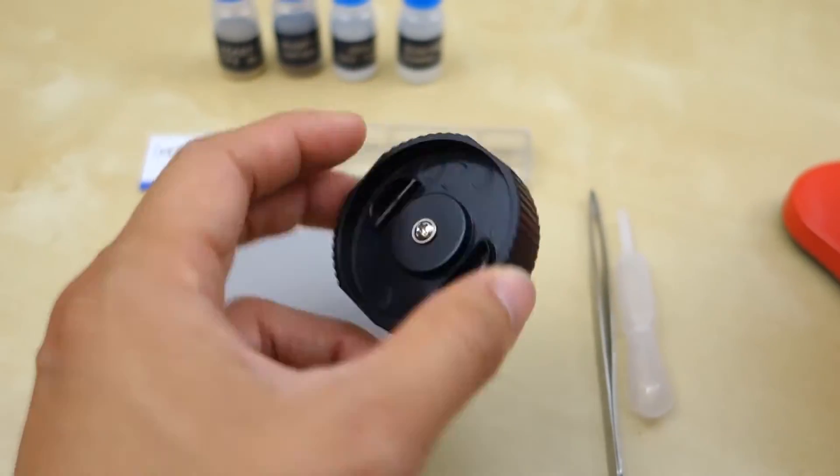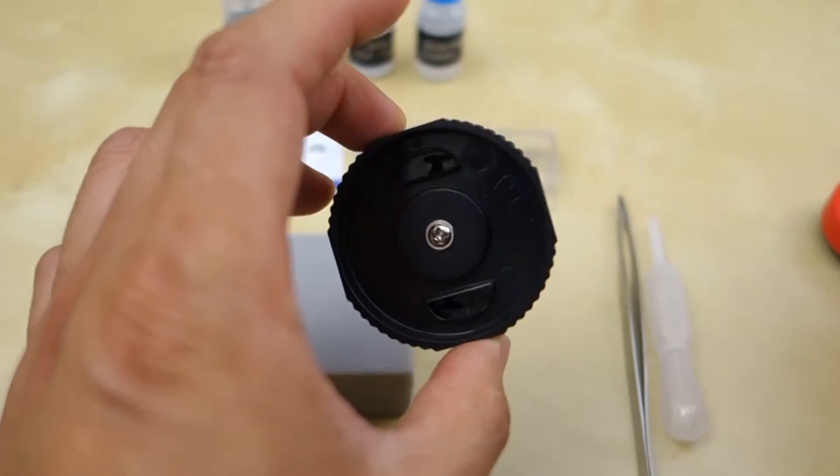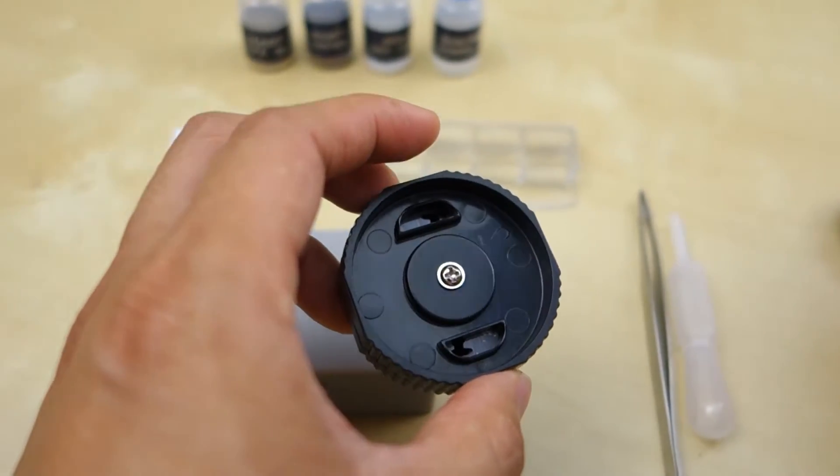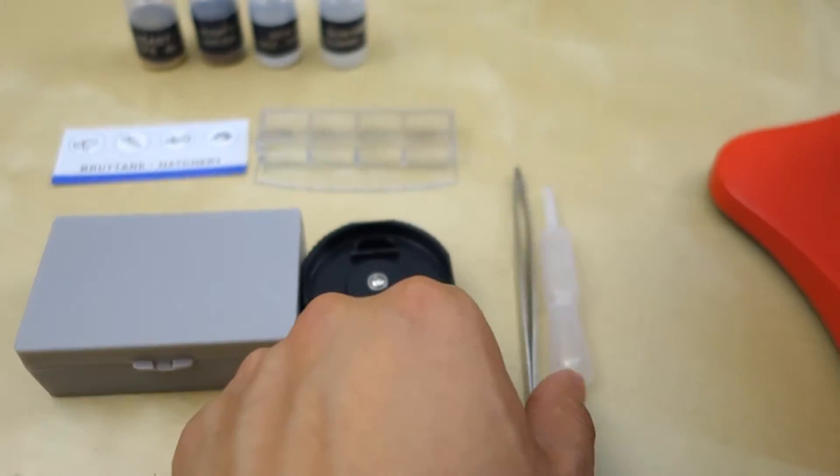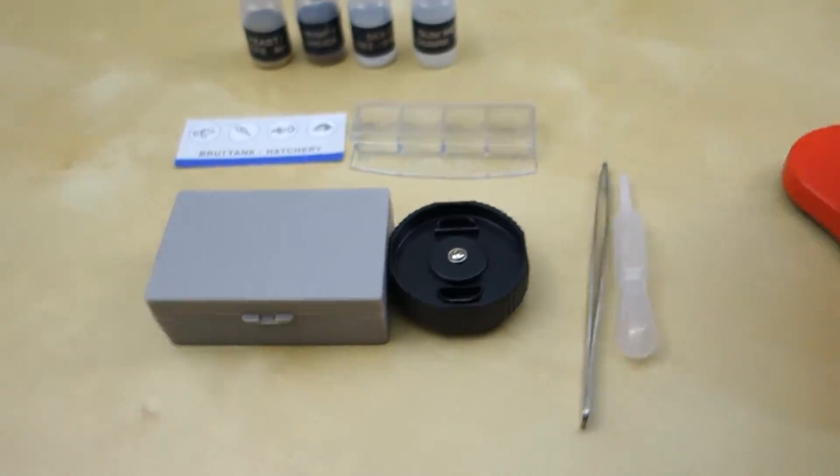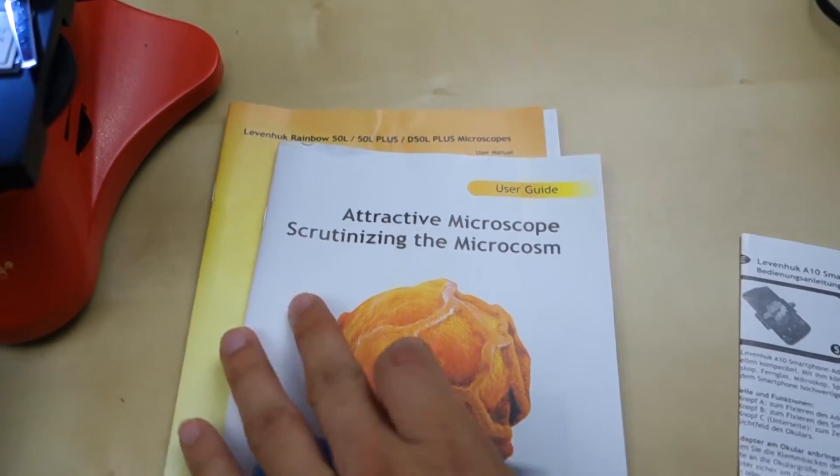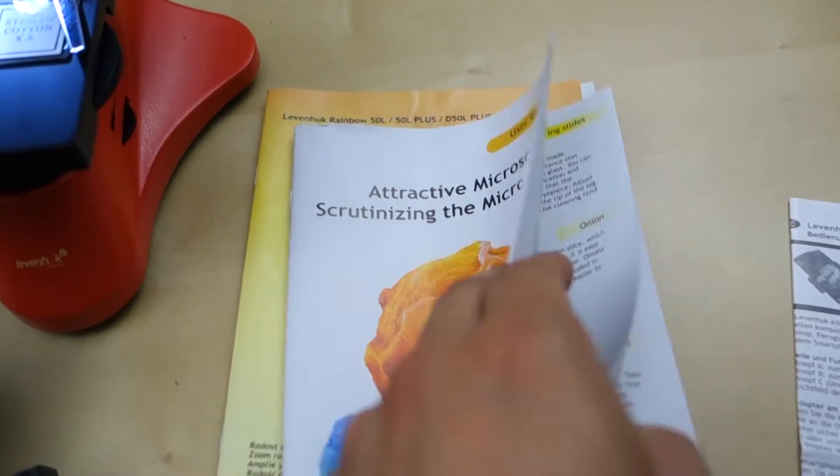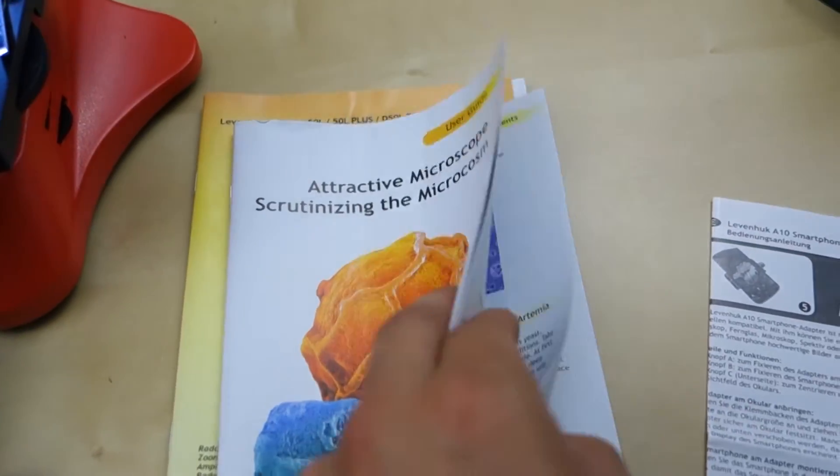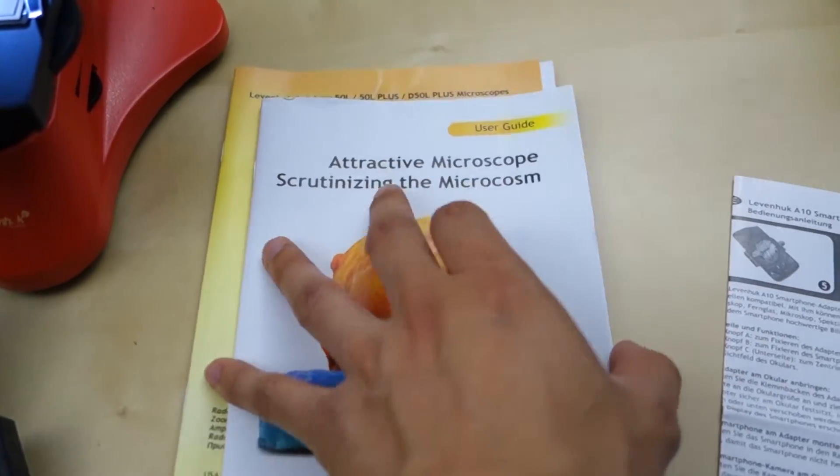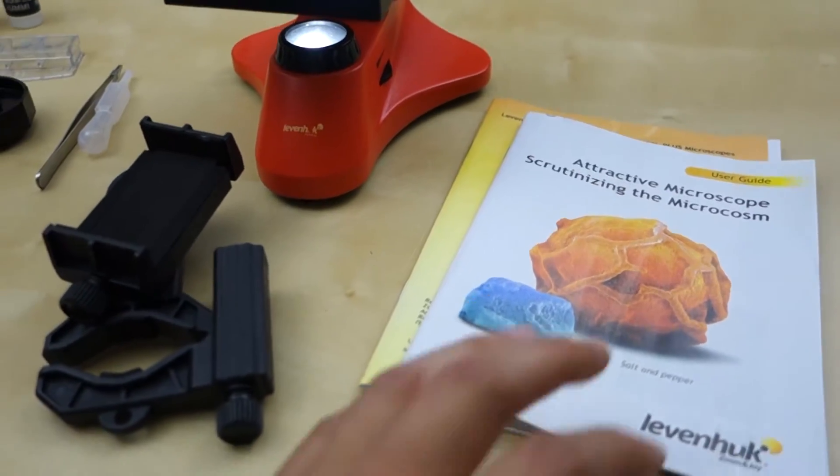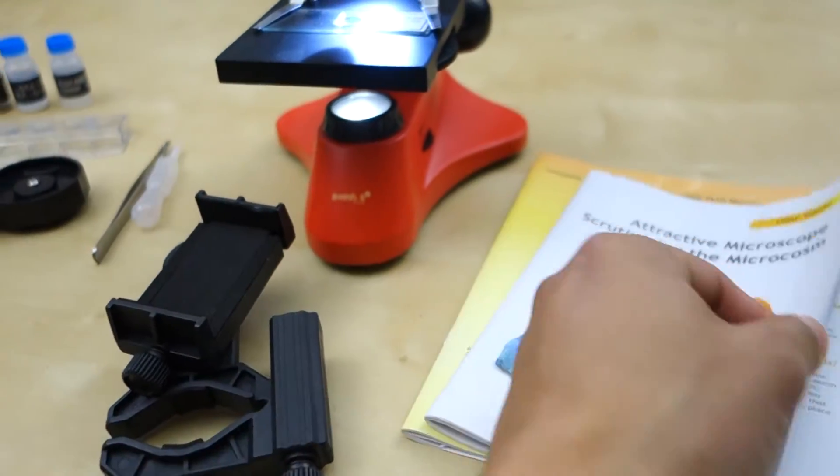You have this microtome that's designed to scrape up live organic material and put it on the slide. And then you got a pair of tweezers, a little water dropper. And then you have the user manual along with the little instruction menu here. And in this thing, it gives you a lot of information. So it's definitely an educational product. So I guess this is geared toward children and anyone who really wanted to learn about microscope.